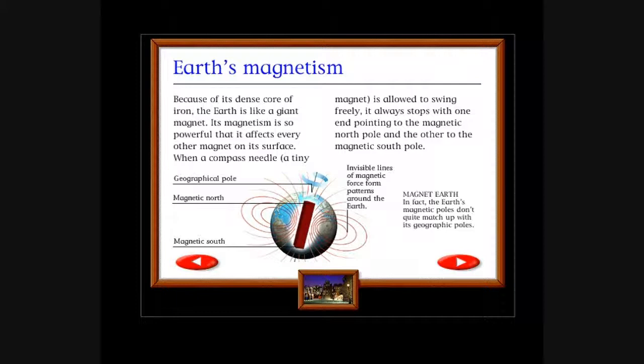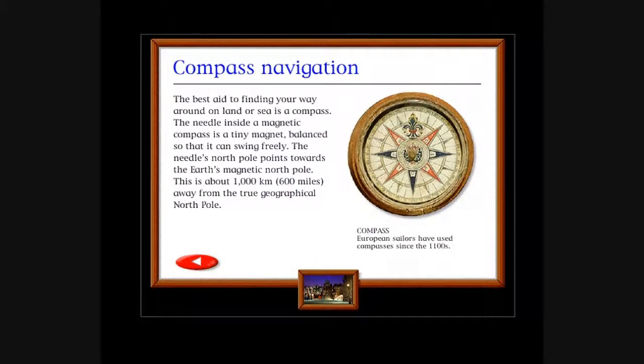Earth's magnetism: Because of its dense core of iron, the earth is like a giant magnet. Its magnetism is so powerful that it affects every other magnet on its surface. When a compass needle, a tiny magnet, is allowed to swing freely, it always stops with one end pointing to the magnetic north pole and the other to the magnetic south pole. Invisible lines of magnetic force form patterns around the earth. Magnet earth: In fact, the earth's magnetic poles don't quite match up with its geographic poles. Oh, so you lied about there being a molten middle, the core. It's actually a big magnet inside the earth. See, they're showing you that picture: geographical pole, magnetic north, magnetic south, invisible lines of magnetic force around the earth. The core is actually a giant magnet. Could be. How do you people know?